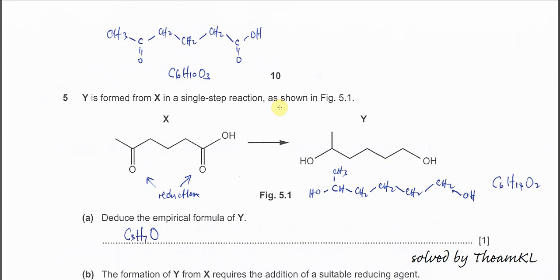Question 5. Compound X will form Y in a one-step reaction. From here we know that the ketone is reduced to the alcohol and the carboxylic acid is also reduced to an alcohol.